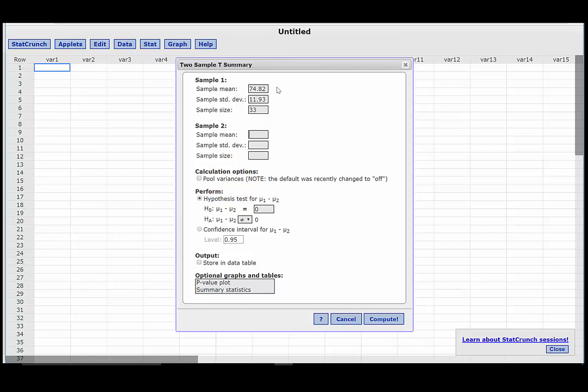For group 2, the sample mean was 84.92, the sample standard deviation was 22.67, and the sample size was 35.